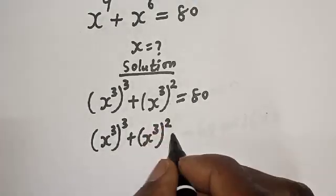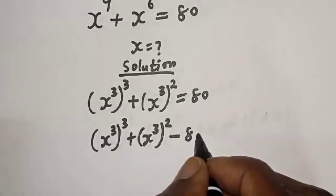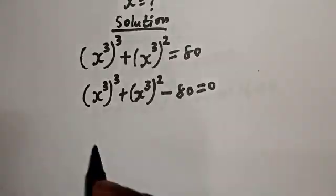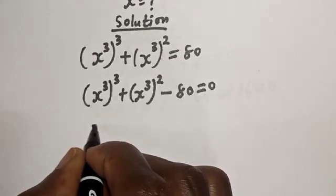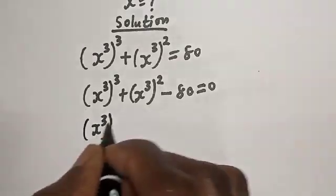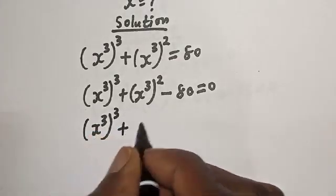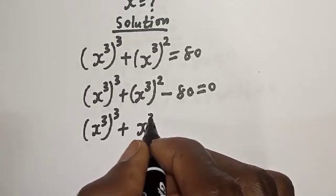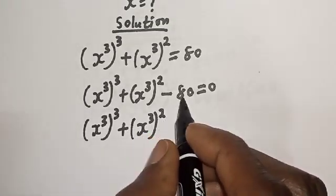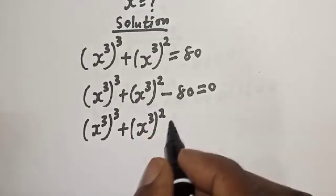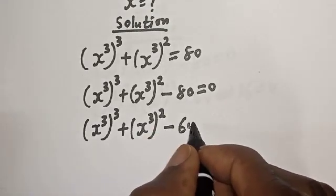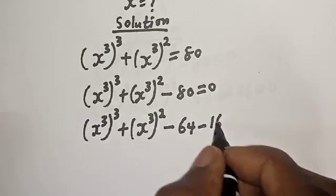If 80 comes to this side, it becomes minus 80, equal to 0. So s raised to power 3, to the power of 3, plus s raised to power 3 squared, minus 80 can be written as minus 64 minus 16.